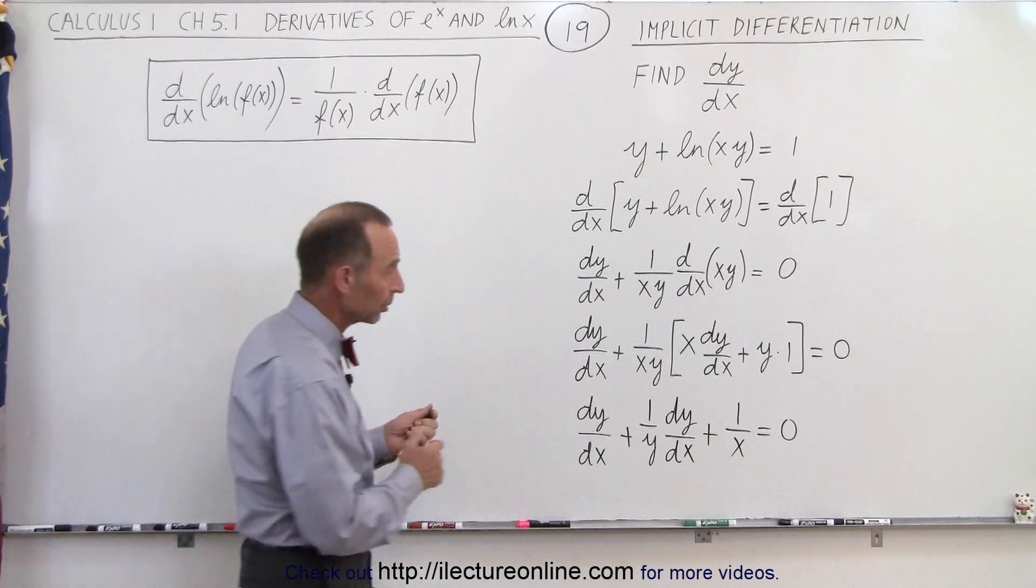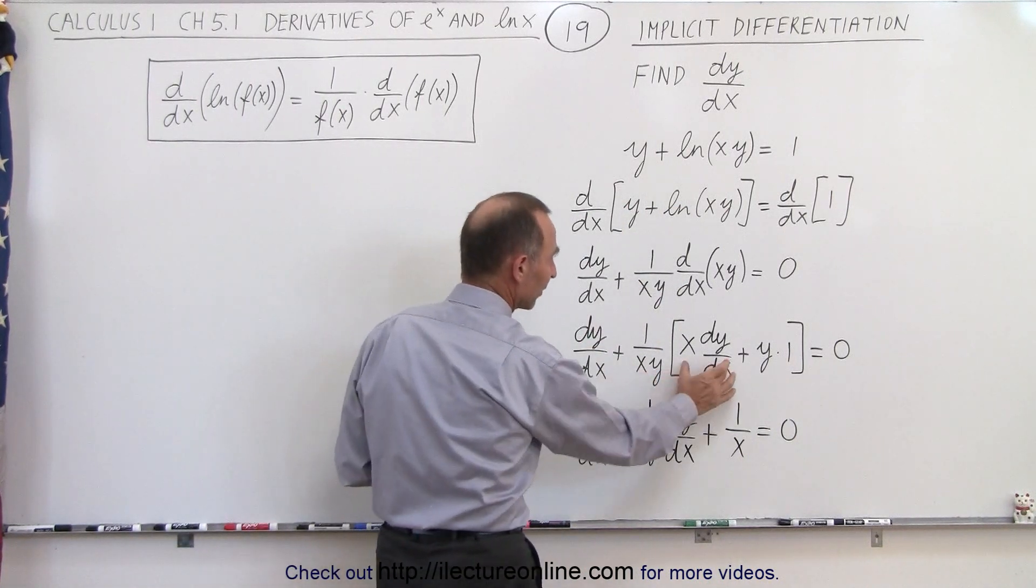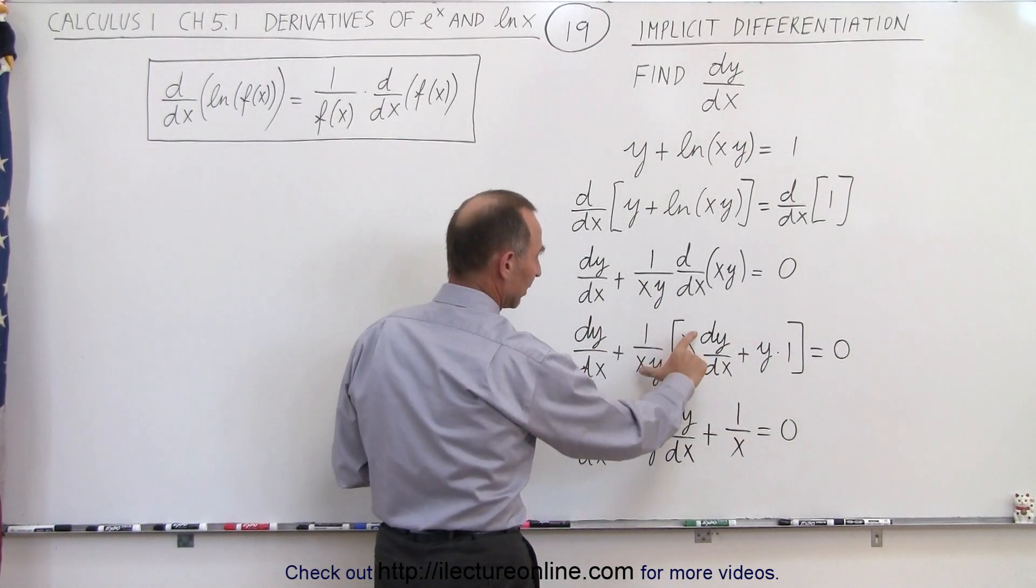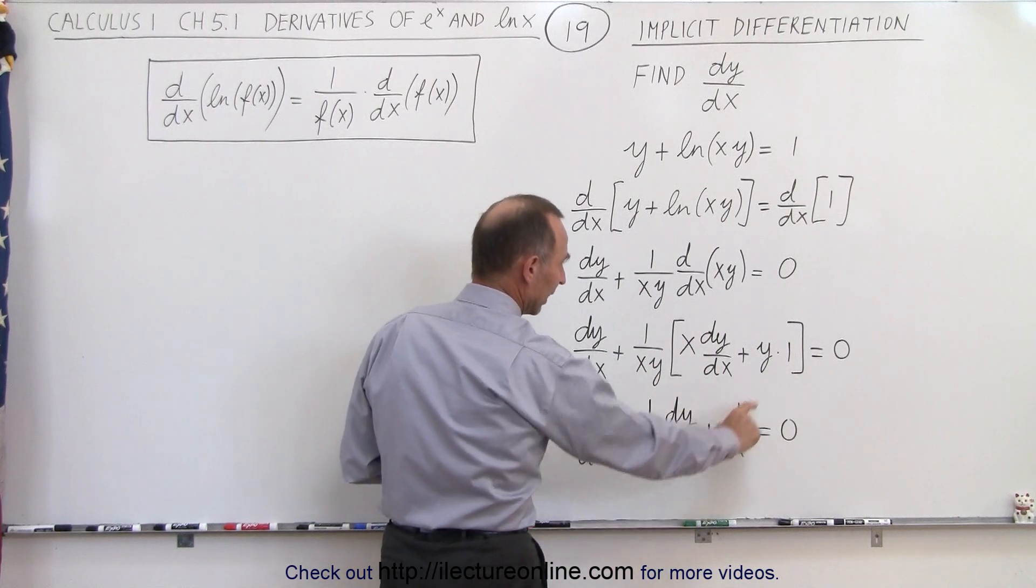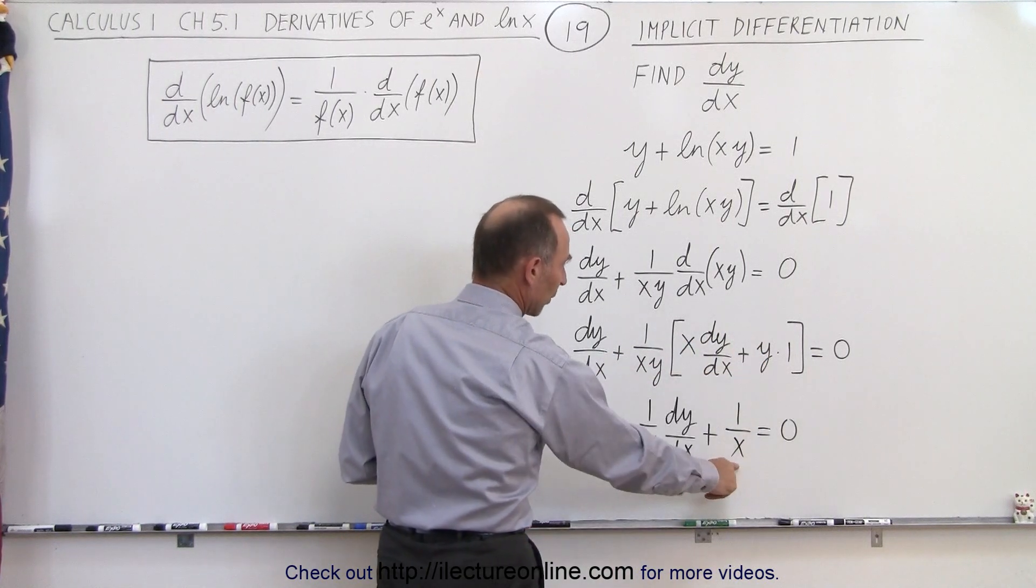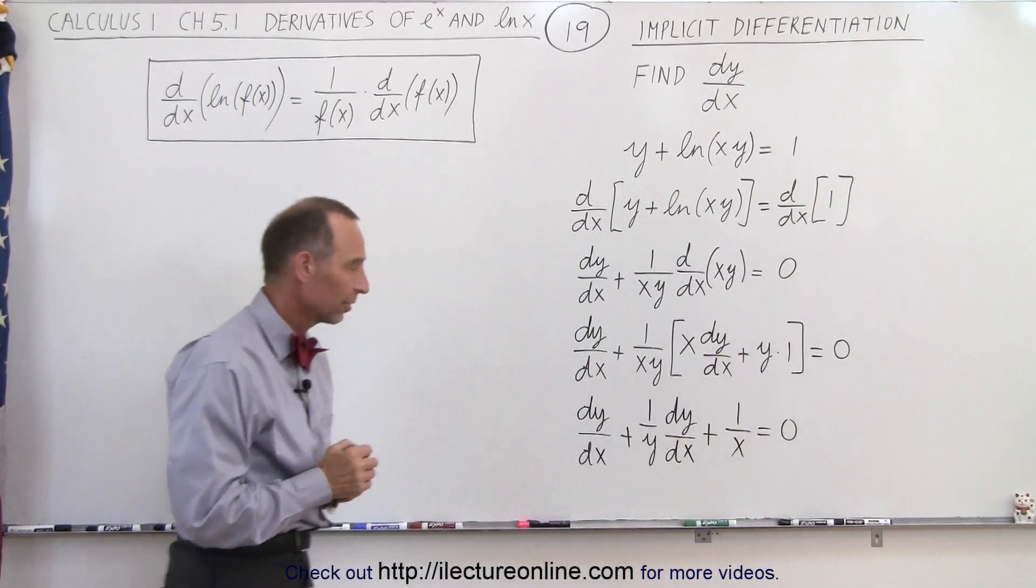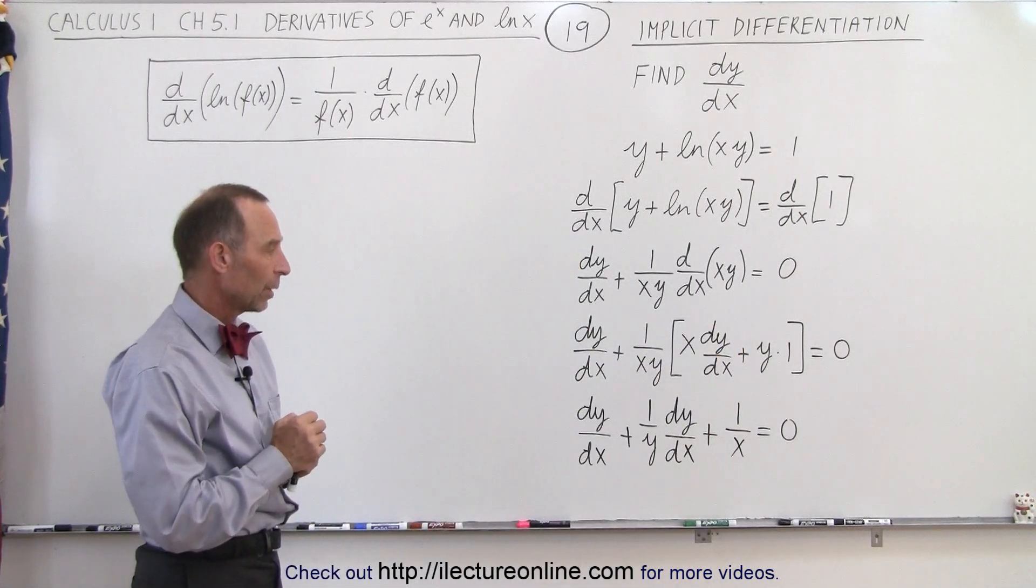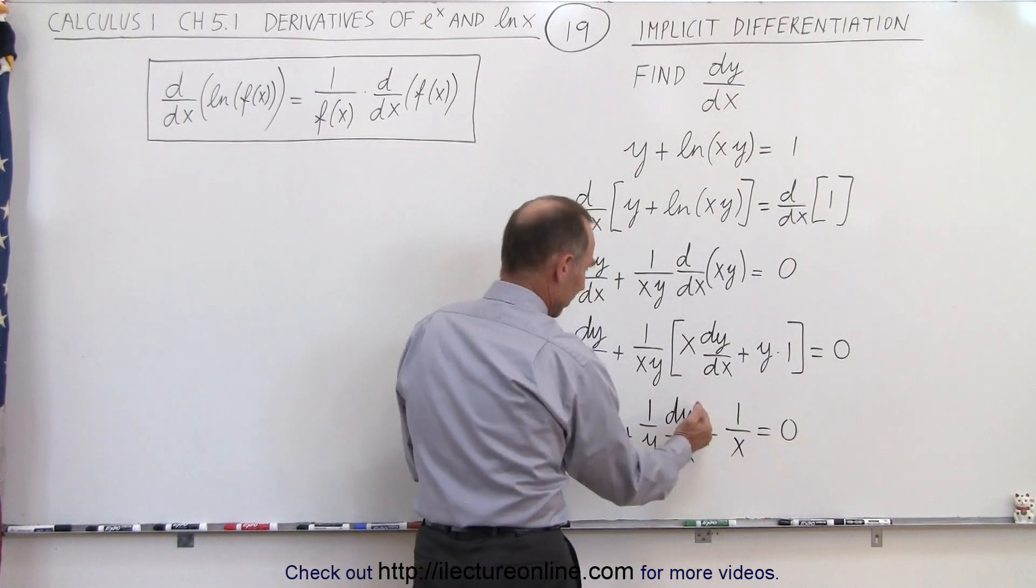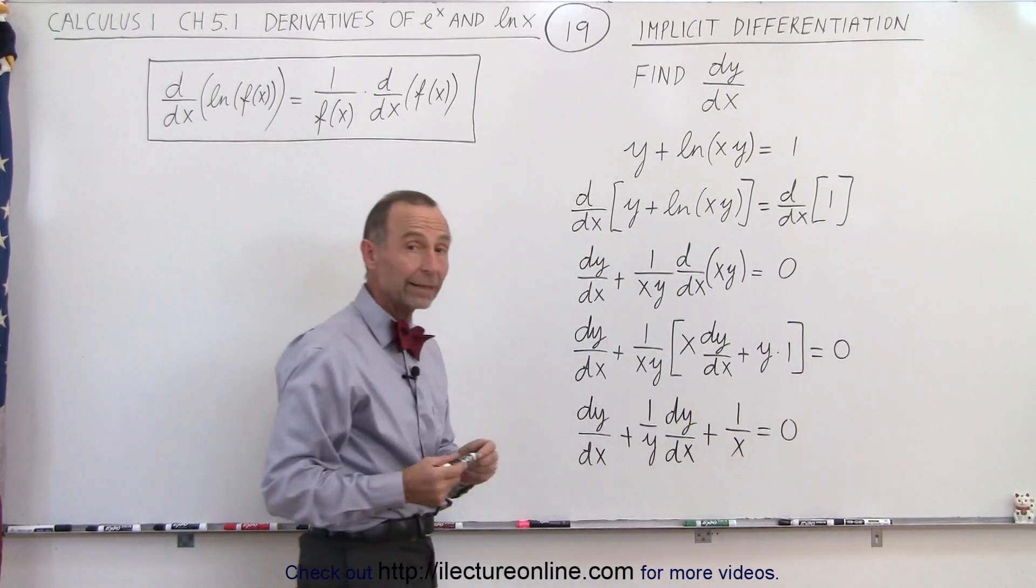So what I've done here is I multiplied 1 over xy times these two terms. In this case the x's cancel out, we have 1 over y. In this case the y's cancel out, we end up with 1 over x, but here of course we also have a dy/dx. So the next thing what I want to do is move the 1 over x to the right side, and on the left side factor out a dy/dx.